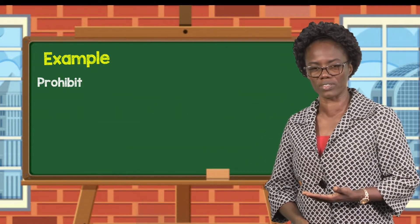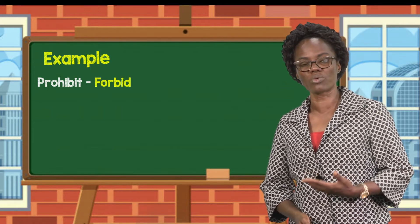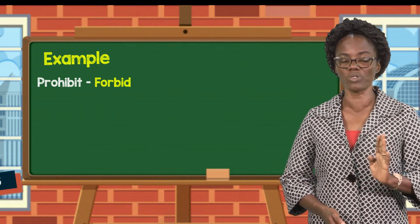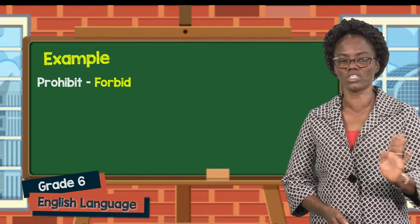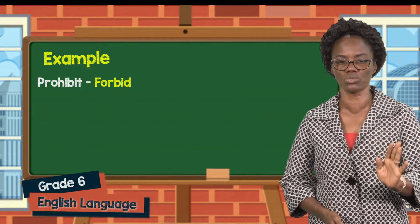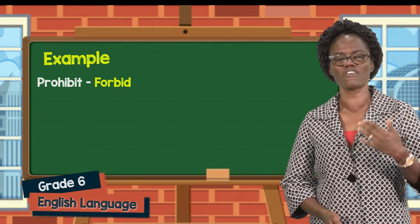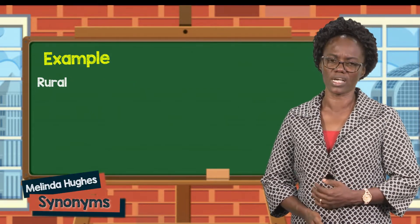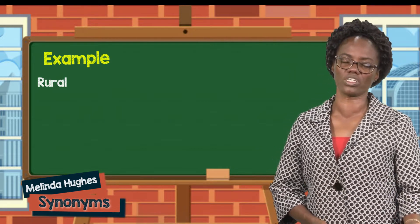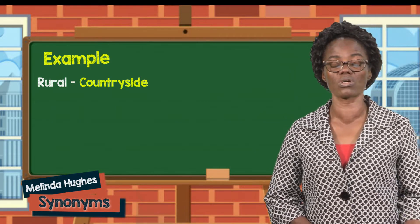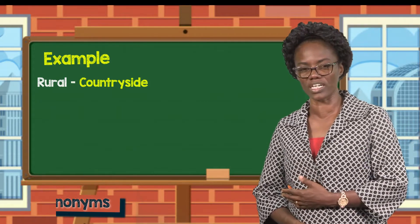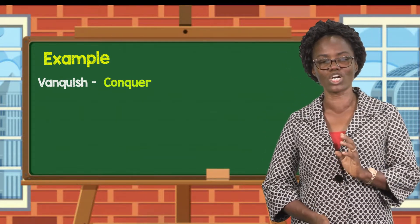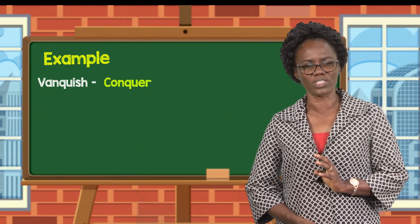Then we have prohibit — prohibit and forbid are two synonyms; it simply means you cannot interfere or you cannot use something — it is prohibited or forbidden. Then we have rural — in Guyana, we have rural areas — rural or countryside. And then we have vanquish or conquer.